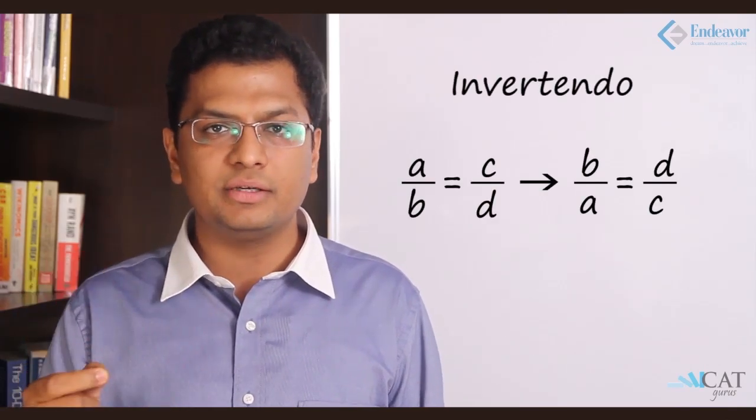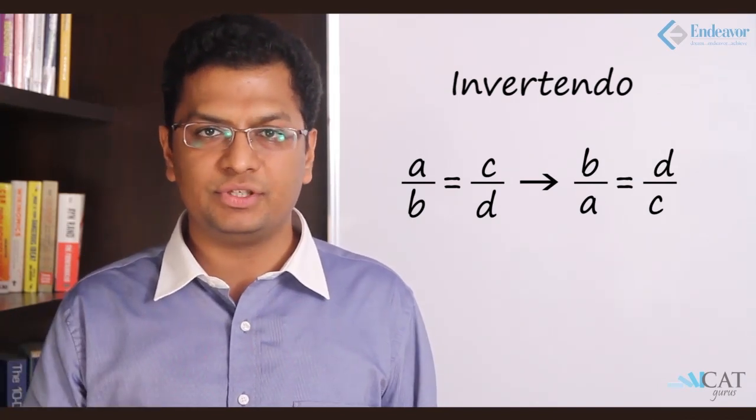Let's look at some concepts. There is something called invertendo. Invertendo is nothing but if A is to B equal to C is to D, then if we invert it, B is to A will also be equal to D is to C. We are doing nothing but inverting the entire equation.